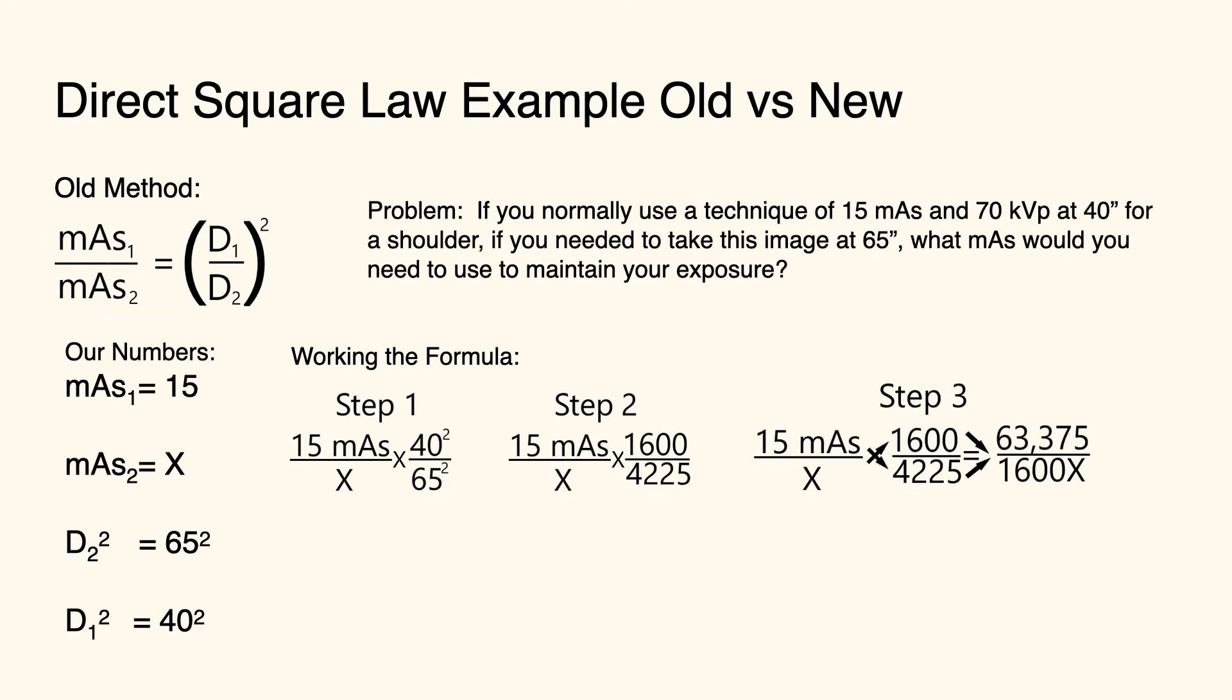At step three, you either cross multiply or invert and multiply. One of the two either works. At the fourth step, you reduce your fraction. At the fifth step, then you isolate x. So in this case, we have x equals 39.6 or 40 mAs. So we're going from 15 mAs to 40 mAs because we've changed from 40 inches to 65 inches.